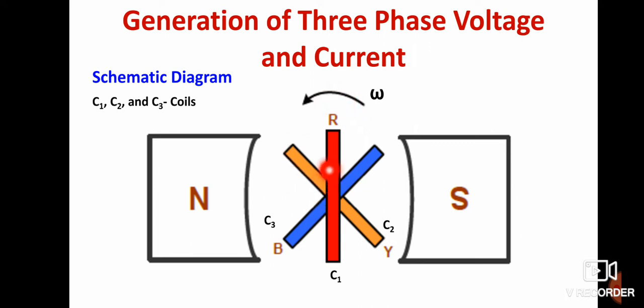Suppose the conductor is rotating, then what happens? A dynamically induced EMF is generated in each conductor. According to Faraday's laws of electromagnetic induction, we can write E is directly proportional to N times dφ/dt. You are already familiar with that equation from my previous class.